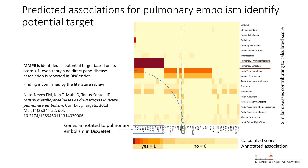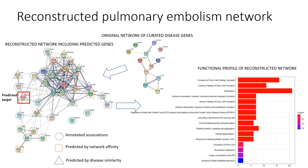As MMP9 plays a role in smooth muscle cell migration and vascular remodeling, its likely mechanistic connection to pulmonary embolism is mediation of its consequences, such as vasculopathy and right ventricular failure. The latter was confirmed in animal models, where inhibition of MMP9 was shown to attenuate consequences of pulmonary embolism. Taken together, known and predicted associated genes allow reconstruction of a more complete and functionally informative disease network for pulmonary embolism, as shown here.